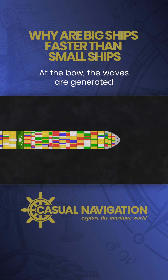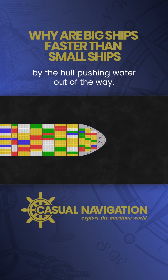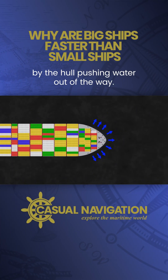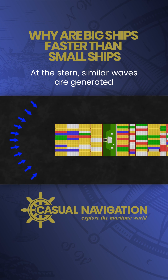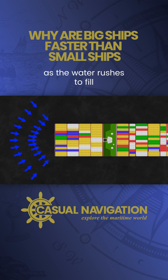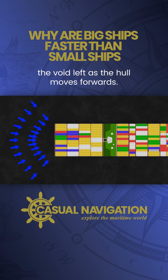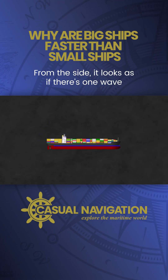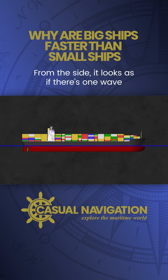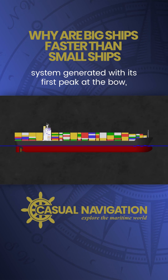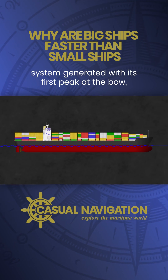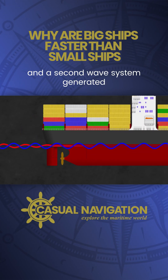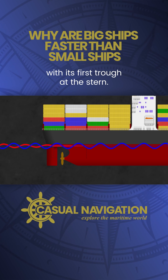At the bow, the waves are generated by the hull pushing water out of the way. At the stern, similar waves are generated as the water rushes to fill the void left as the hull moves forwards. From the side, it looks as if there's one wave system generated with its first peak at the bow, and a second wave system generated with its first trough at the stern.